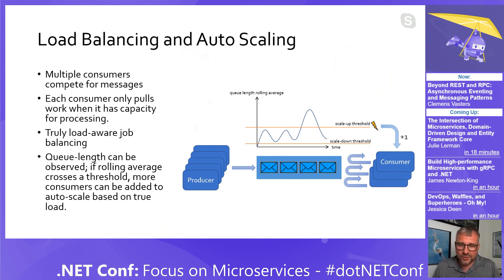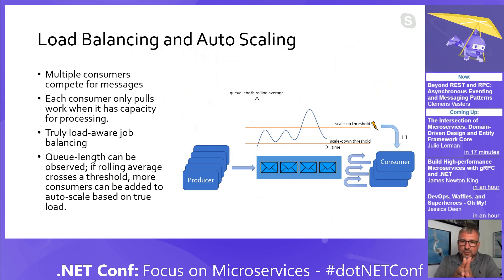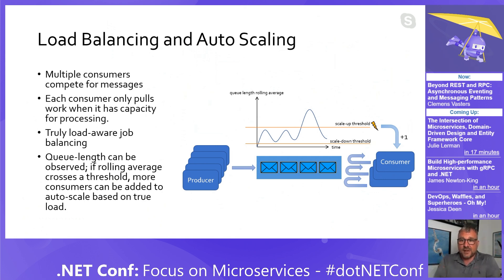You can have multiple consumers pulling from the same queue. The queue ensures that only one job is assigned at any time to one consumer, and every consumer only pulls data when it has capacity — giving you real load balancing. With an HTTP or gRPC load balancer, the infrastructure sprays requests across available parties but is completely unaware of how much capacity those parties have to do processing. Figuring out the right load levels that way is quite a bit of black magic.